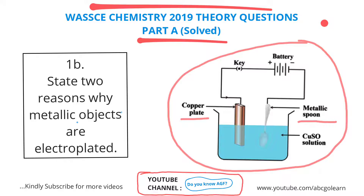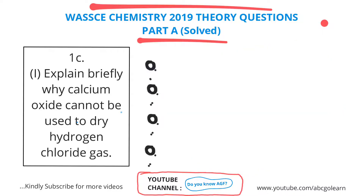Just like the metallic object given in this question, you can see a metallic spoon here, and a copper plate is used to coat it. This leads us to the reasons why we electroplate things. Number one: to prevent rusting — we electroplate a metal to prevent it from rusting. Number two: for durability — the electroplated object will last longer. It also changes the appearance of things; electroplating makes a metal shiny and is used for decorations and to improve the quality of the metal.